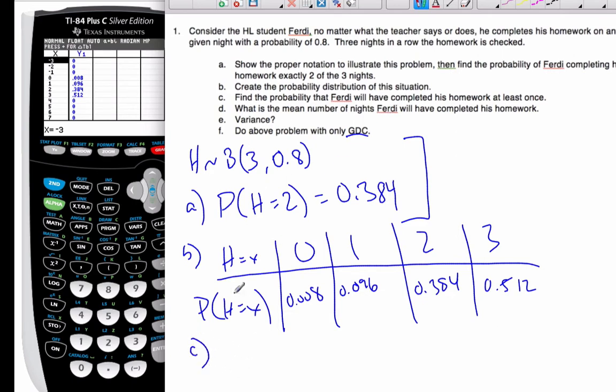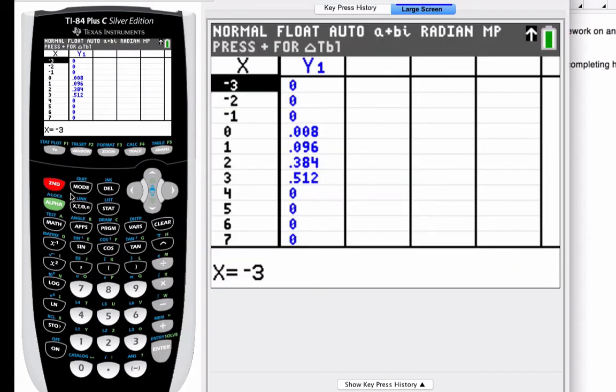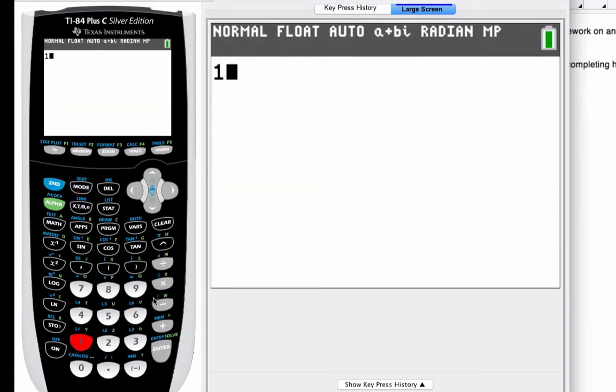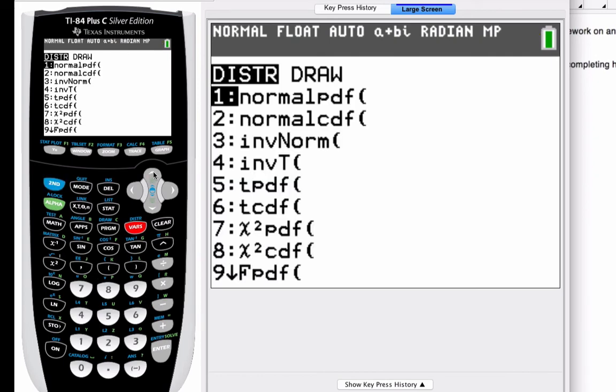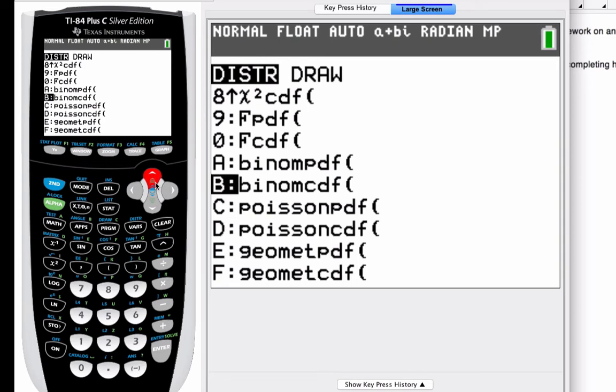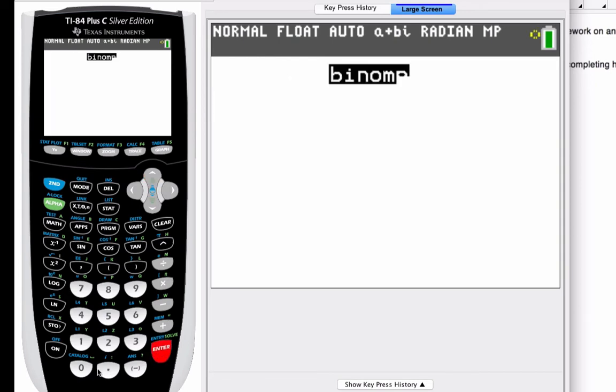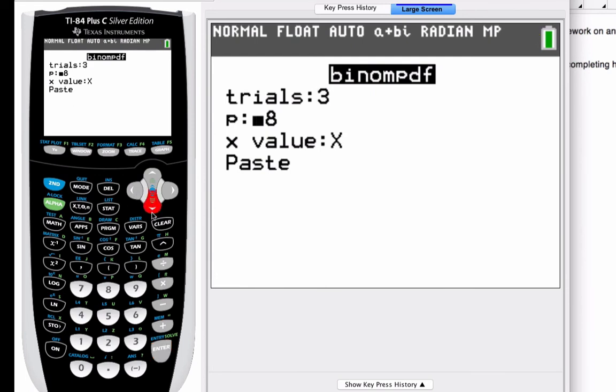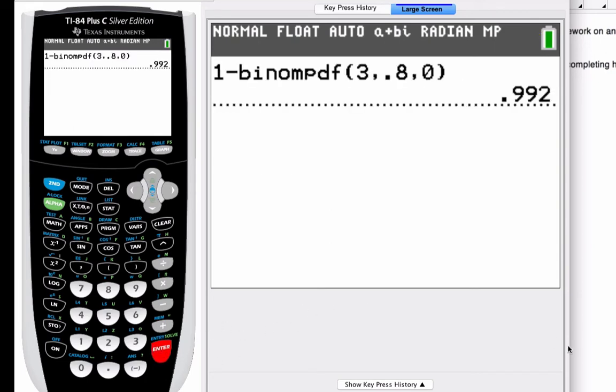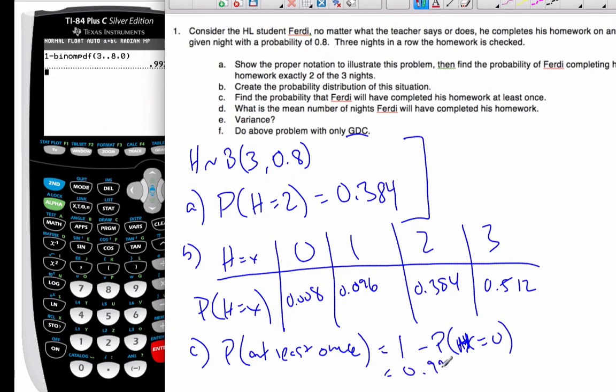Now, we want to find the probability that Ferdy completes homework at least once. That's 1 minus the probability of him never not doing his homework at all. Again, I'm going to go to my calculator. 1 minus second distribution. Go up to binomial PDF. And I'm going to change my x now to 0. Hit enter. And I get 0.992.